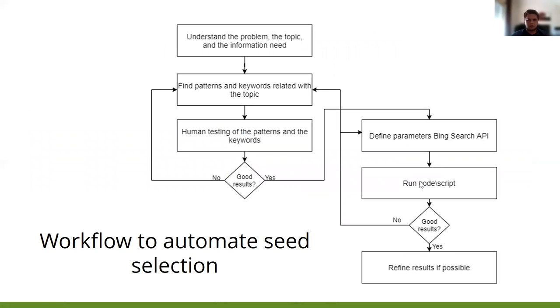Here you can see the workflow for automated seed selection: understand the problem, find the patterns, human testing, define the parameters for Bing Search API, run the code, and then refine the results if possible.